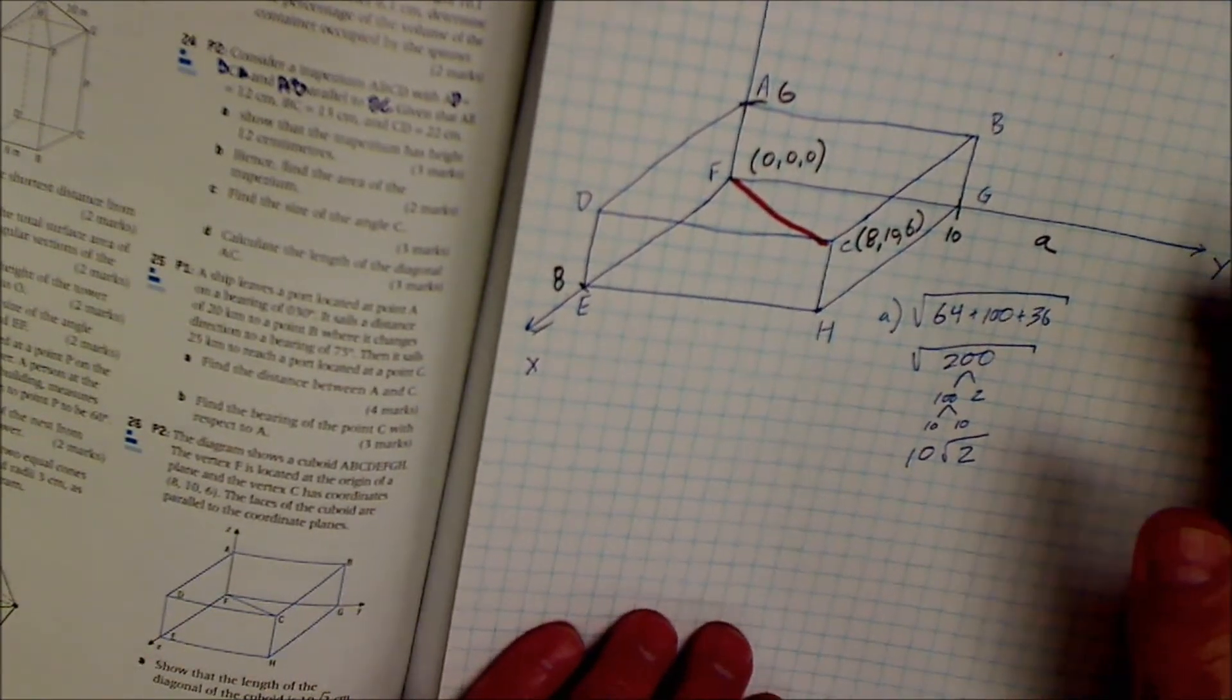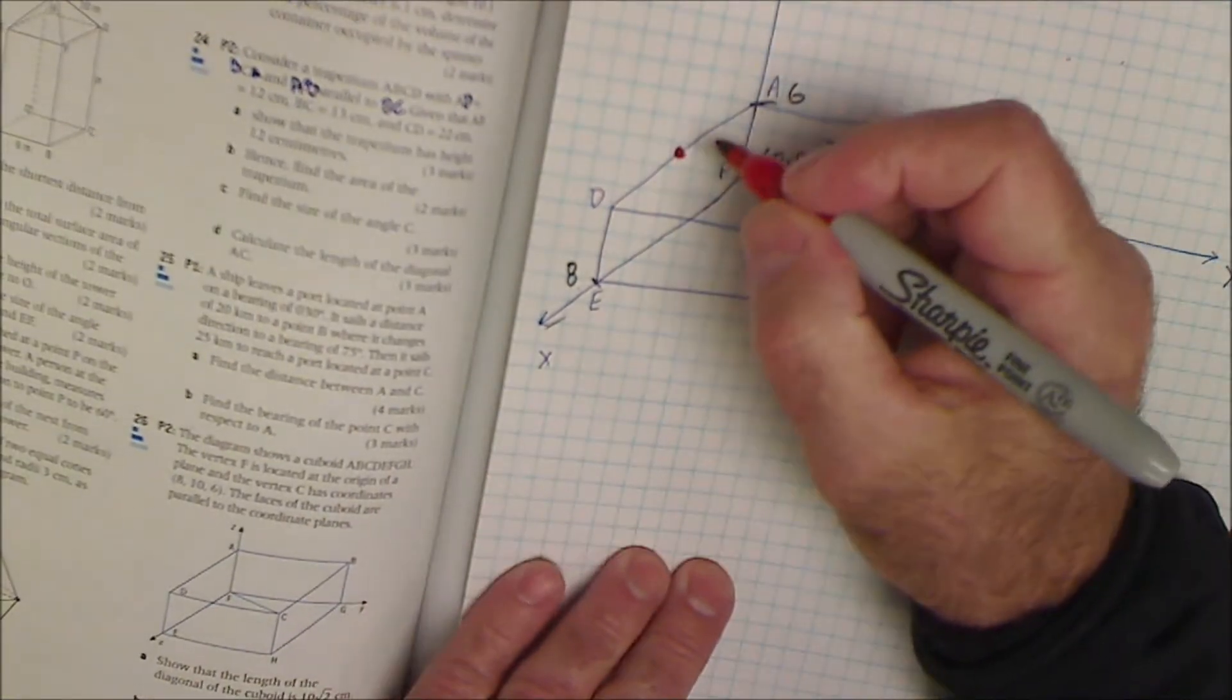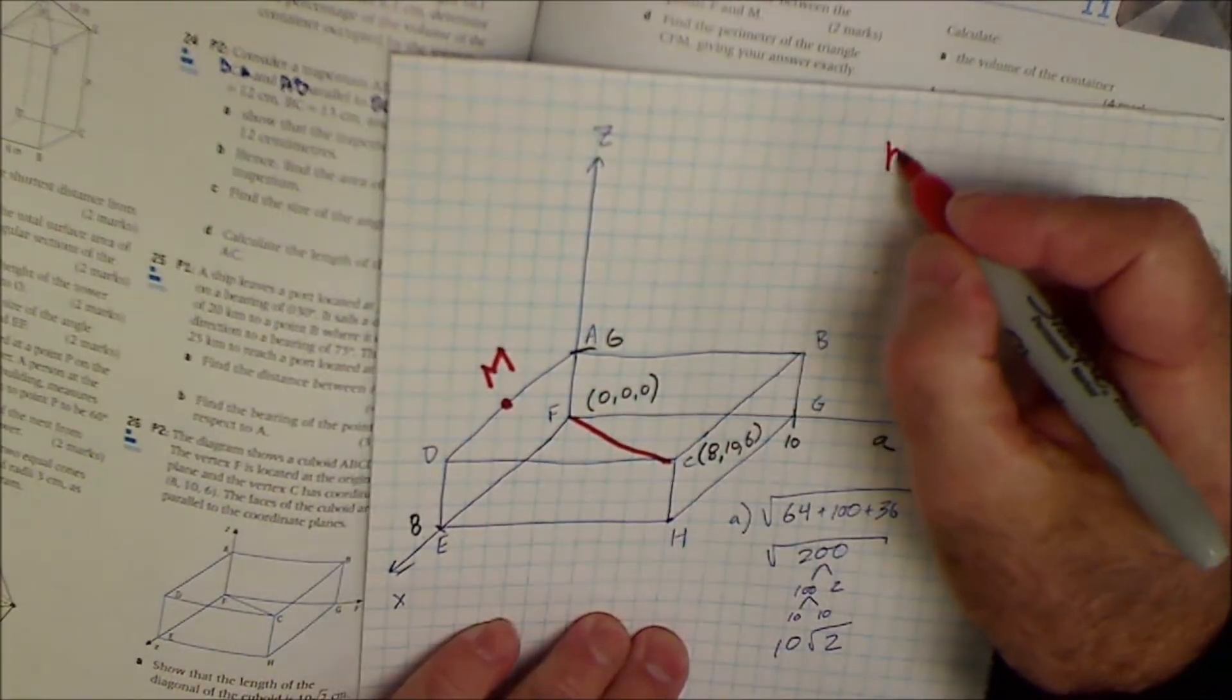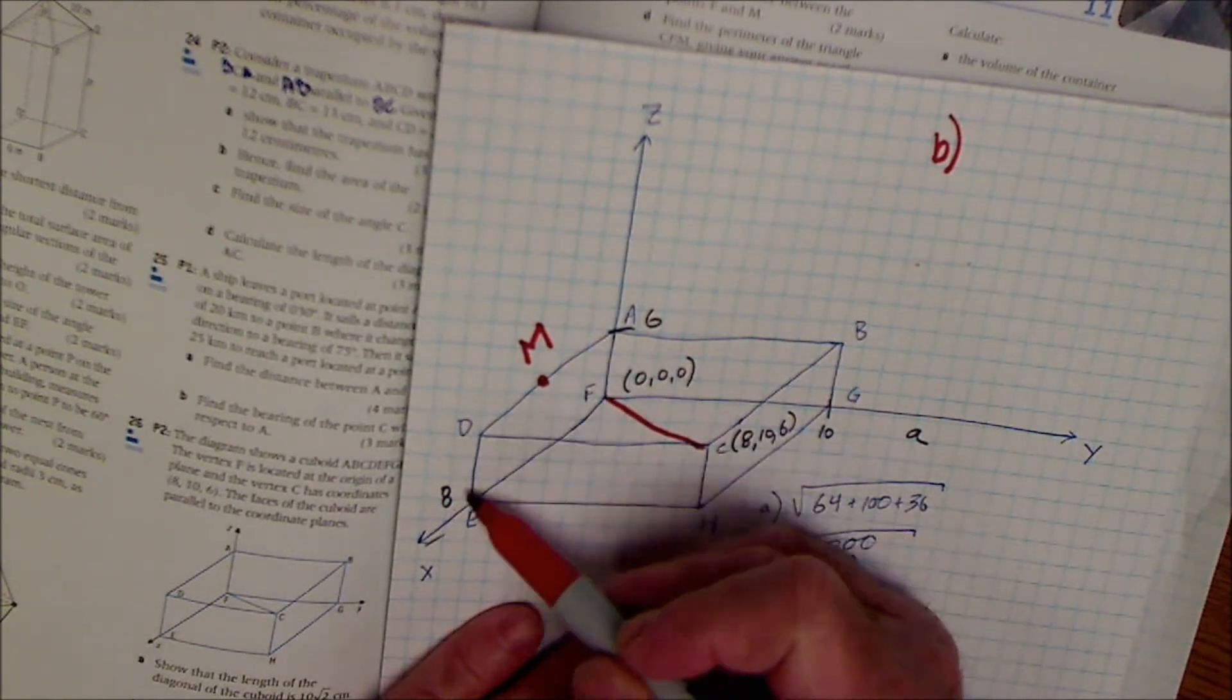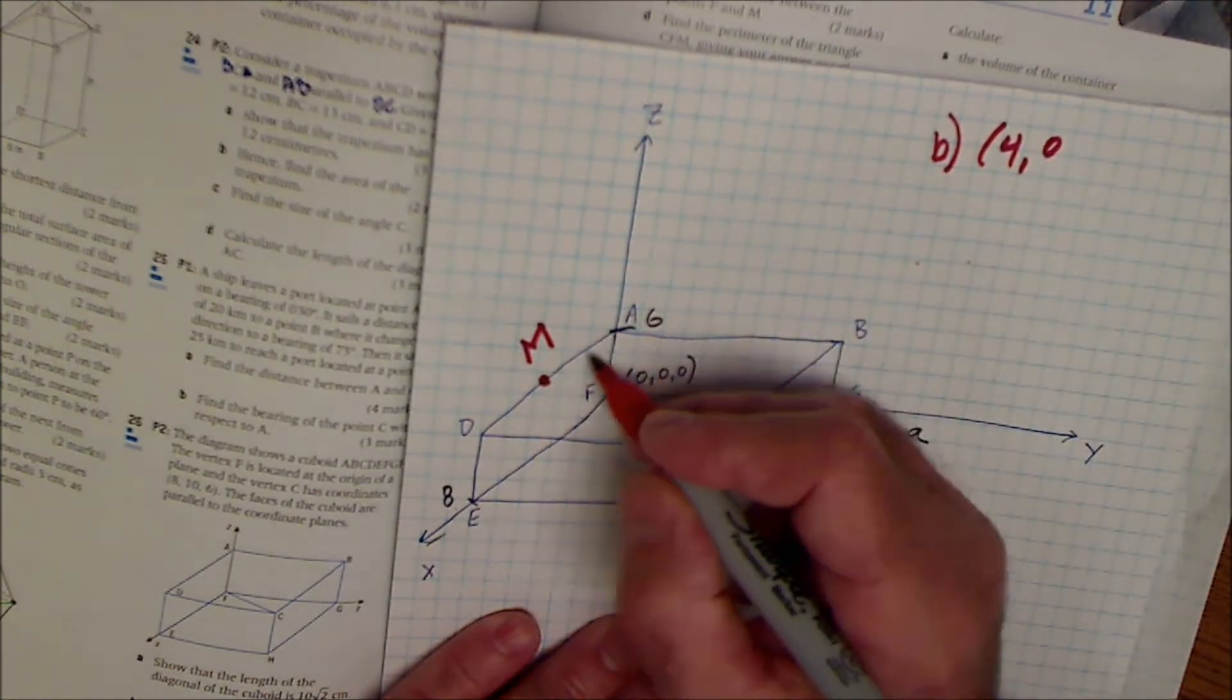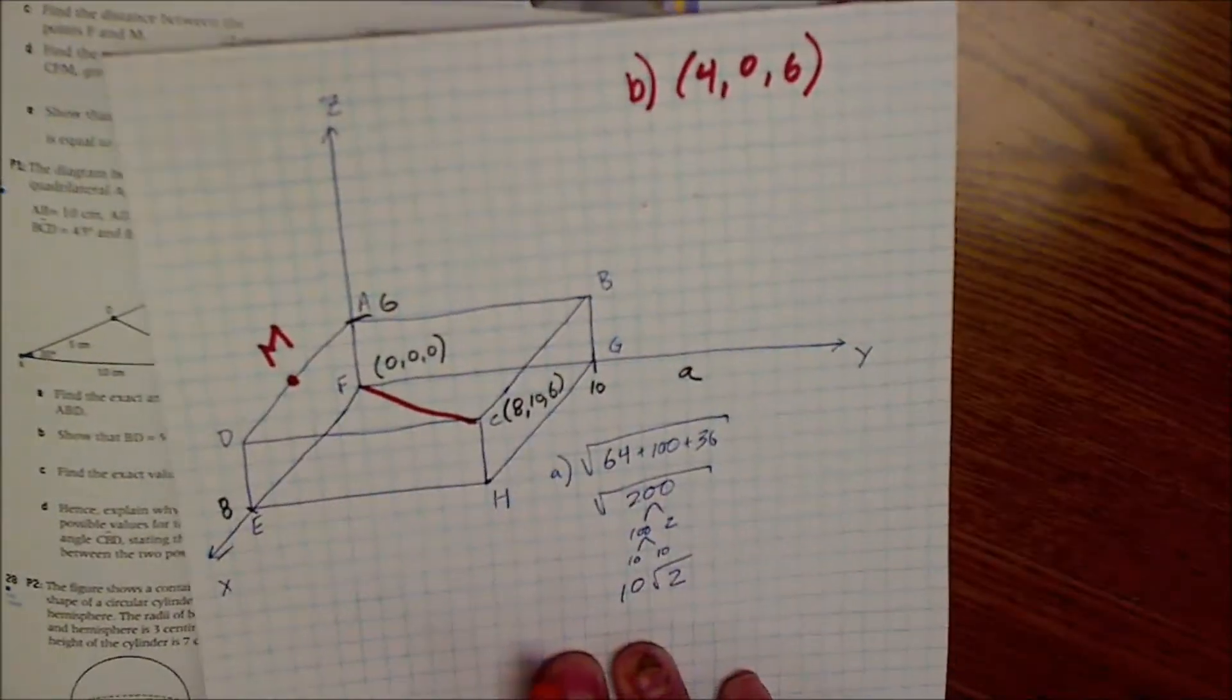Part B determine the coordinate of the midpoint of segment AD. So this is segment AD. I'm going to put the midpoint in here. I'm going to call that midpoint M. The coordinates for that midpoint, we just kind of figure this out, is that in this x-plane, I go half of the way down the edge of the box. So in x, I go 4. In y, I come out 0. And then in z, it's at the top of the box, which is 6. So the coordinate of that midpoint is 4, 0, 6.